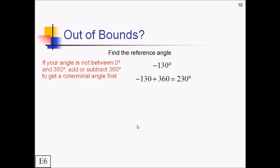And now we can do what we did before to find reference angles. That's in quadrant 3, lower left of the unit circle. So we need the distance between that and 180. So 230 minus 180, that would give us 50.